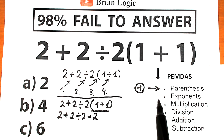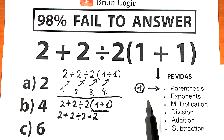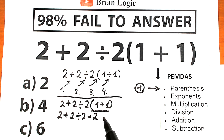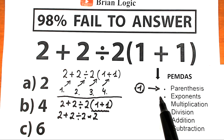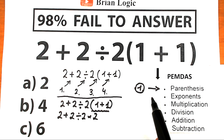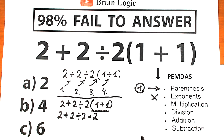The next step after parentheses is to evaluate expressions with exponents — things like 2 squared, 3 cubed, or 4 to the 5th power. Right here, we don't have any powers; everything is to the first power. So we don't need to evaluate this step and can skip it.